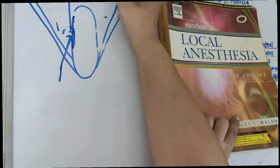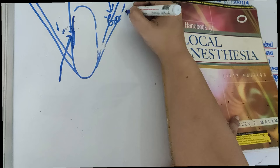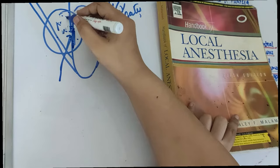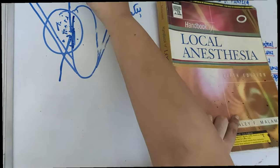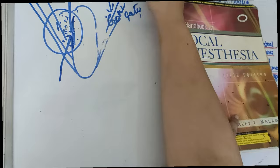If the inferior alveolar nerve block is not working, we go for the Gow-Gates technique. Gow-Gates anesthetizes the whole area — the whole pterygomandibular space — like a field block. It also anesthetizes the lingual nerve and the buccal nerve as well. So if the inferior alveolar nerve block fails, go for the Gow-Gates technique.